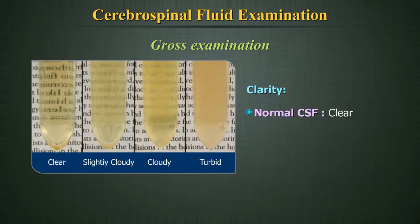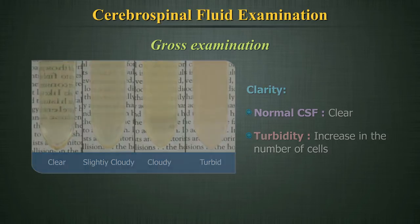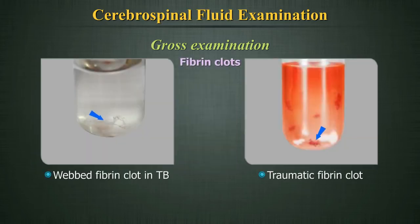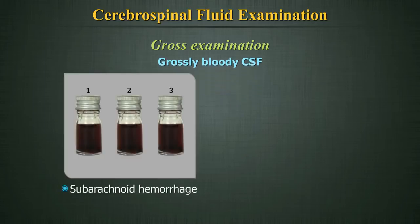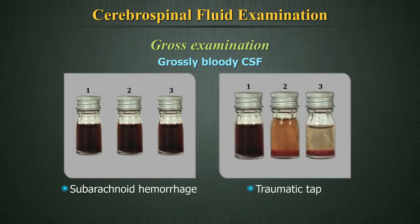Clarity: Normal CSF is clear. Turbidity is seen when there is an increase in the number of cells. Coagula: Fibrin clots can be found if the protein content in the CSF is very high. A clot is also possible in a traumatic tap condition. Grossly bloody CSF: It is possible to distinguish if the presence of blood was due to subarachnoid hemorrhage or a traumatic tap.